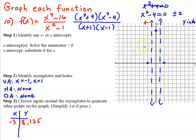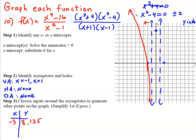As x approaches negative infinity, the graph continues going upward in that direction. Connecting the table value point with the x-intercept at -2, after passing through that intercept we approach the vertical asymptote at x = -1 forever. So the curve comes from upper left, crosses through x = -2, and approaches the vertical asymptote.